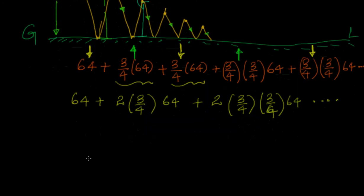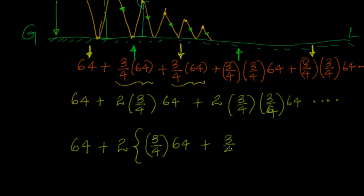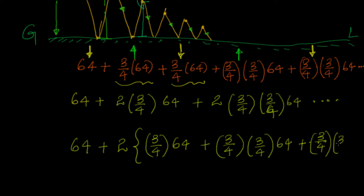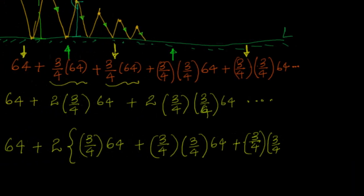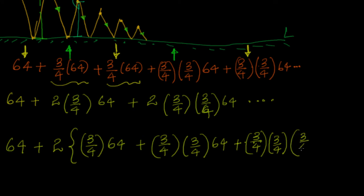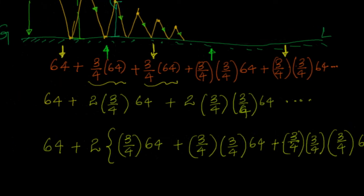If I take 64 separate and take the 2 out, I see a geometric series: (3/4)×64 plus (3/4)×(3/4)×64 plus (3/4)×(3/4)×(3/4)×64, and that continues. So the total distance is 64 plus 2 times the sum of this geometric progression, which continues till the ball comes to rest.